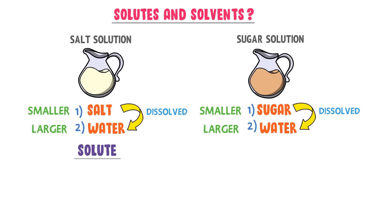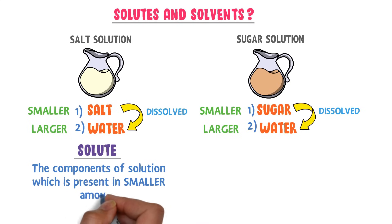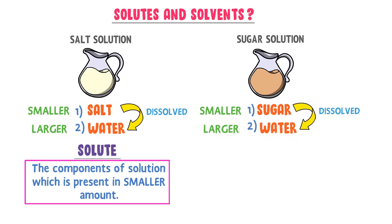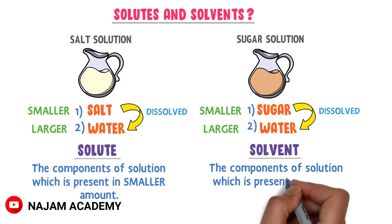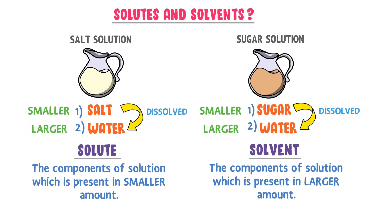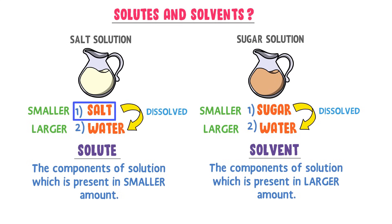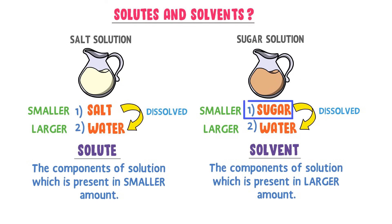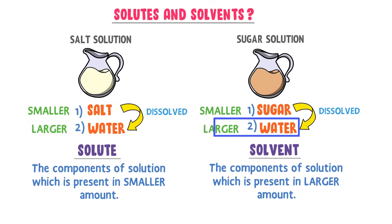Therefore, we define solute as the component of a solution which is present in smaller amount. The component of a solution which is present in larger amount is called solvent. So in salt solution, salt is a solute because it is present in smaller amount, and water is a solvent because it is present in larger amount. In sugar solution, sugar is a solute because it is present in smaller amount, while water is again the solvent.